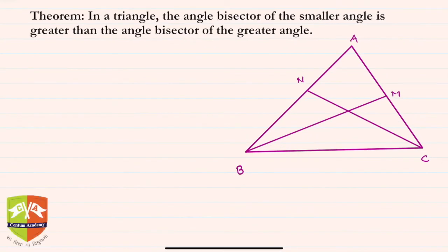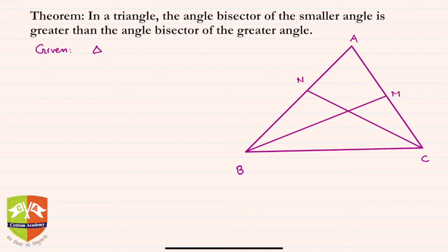Hello friends, welcome again to another session on Gems of Geometry. We have come with another theorem. It says: in a triangle, the angle bisector of the smaller angle is greater than the angle bisector of the greater angle. So let us say in triangle ABC — this is the given part — given triangle ABC such that angle B is less than angle C.